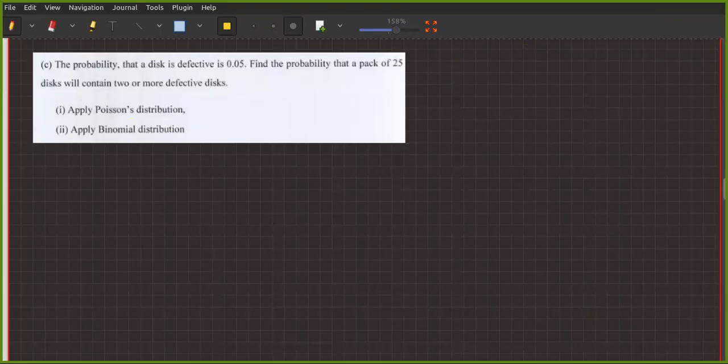Alright, so Poisson distribution and binomial distribution is a problem in this channel. One of the problems is that we have to quickly go through the details and concepts. So we have to do number two and then we have to do number one because usually we have much more progress for binomial distribution. The question is: the probability that a disk is defective is 0.05. Find the probability that a pack of 25 disks will contain two or more defective disks. So it could be a straightforward question.